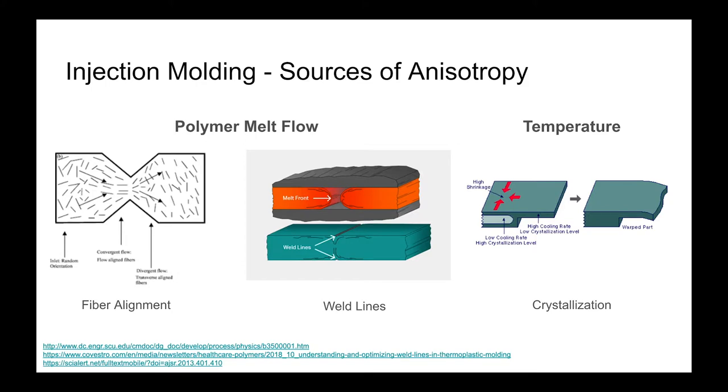In reality though, polymeric parts are rarely perfectly isotropic for a variety of reasons. Anisotropy in molded parts can come from differences in flow or temperature during the molding process. Particularly in fiber-reinforced materials, these fibers can align along the flow direction, which means that you can get very different properties when you test along that alignment versus against it.